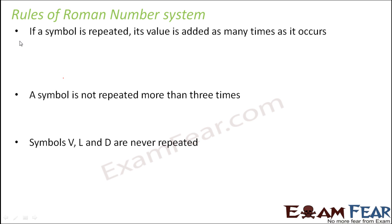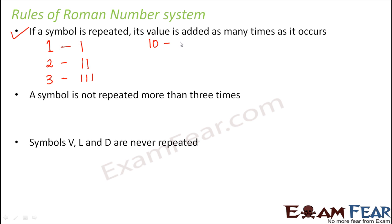Rule number 1: if a symbol is repeated, its value is added as many times as it occurs. For example, how do we write 1? So 1 is written by a capital I like this. Now if we repeat this symbol twice, that means this actually means 1 plus 1. So this is how we write 2. If we repeat this symbol for 3 times, then this becomes 3 because it is 1 plus 1 plus 1. How do we write 10? We write it as capital X.